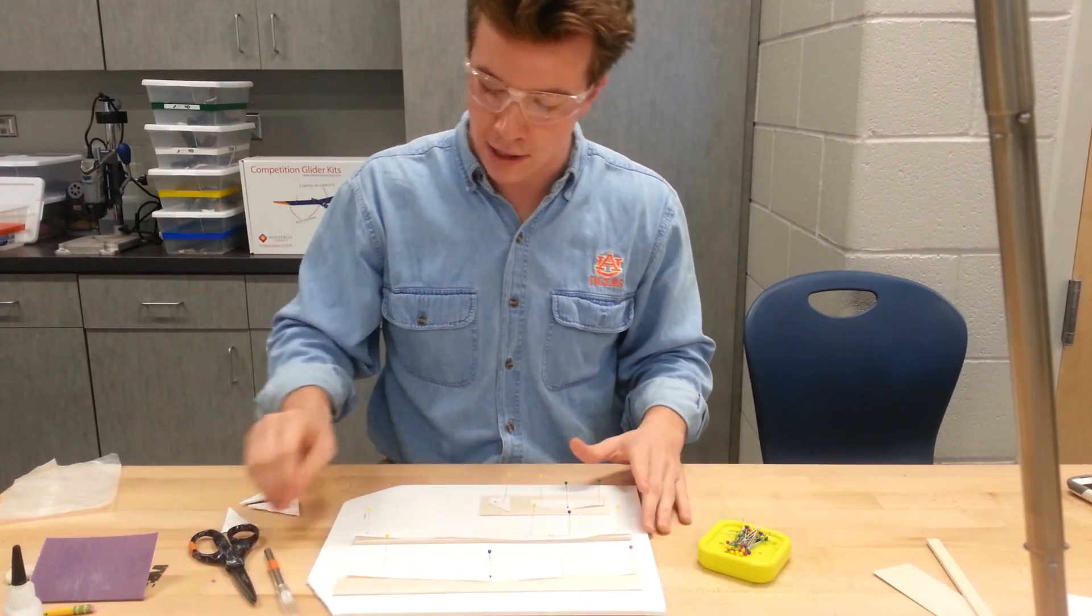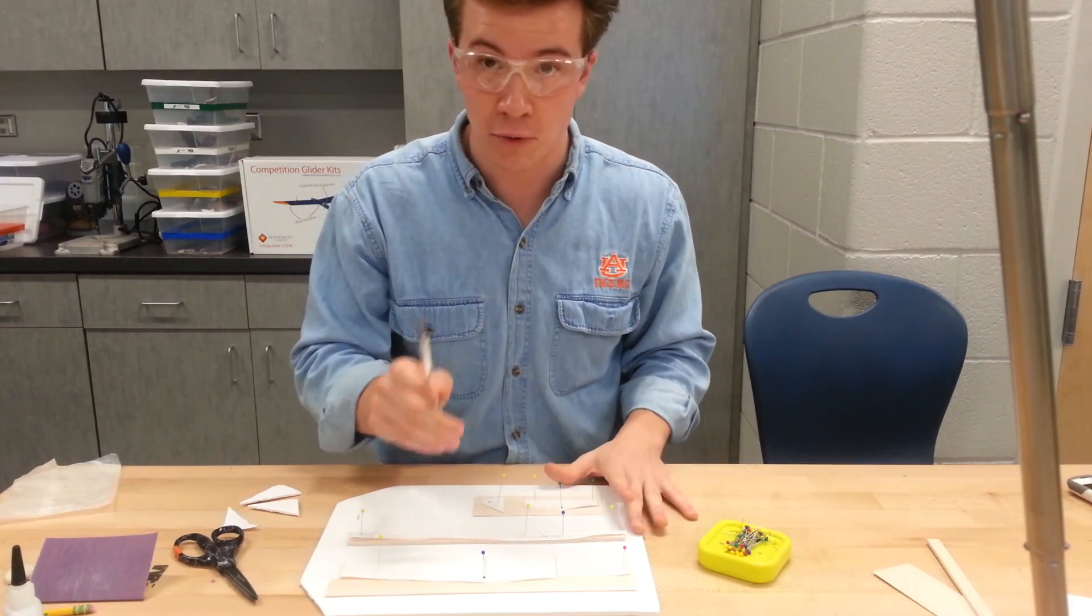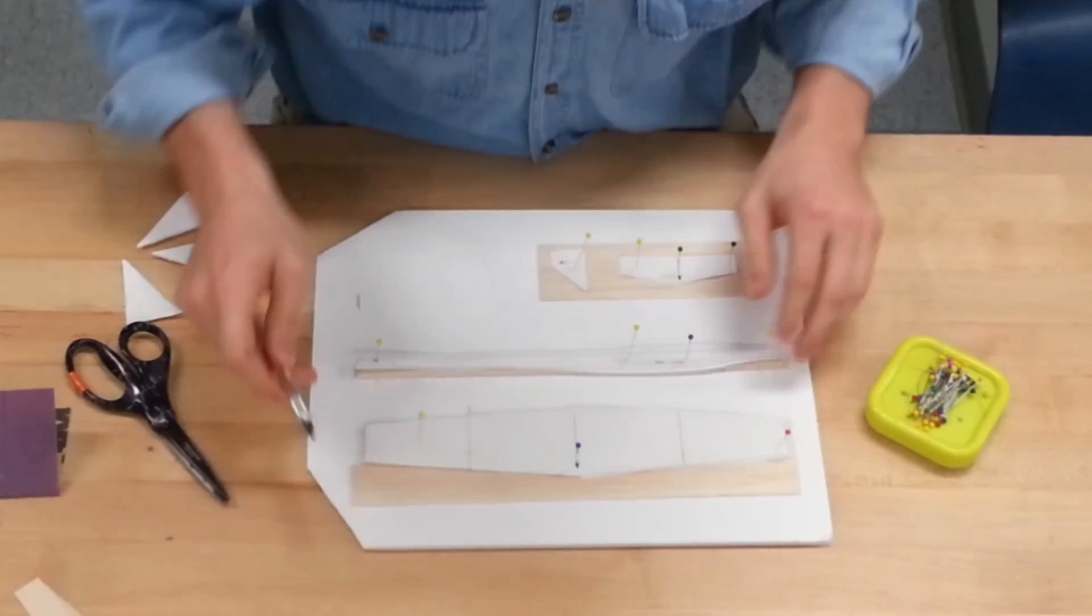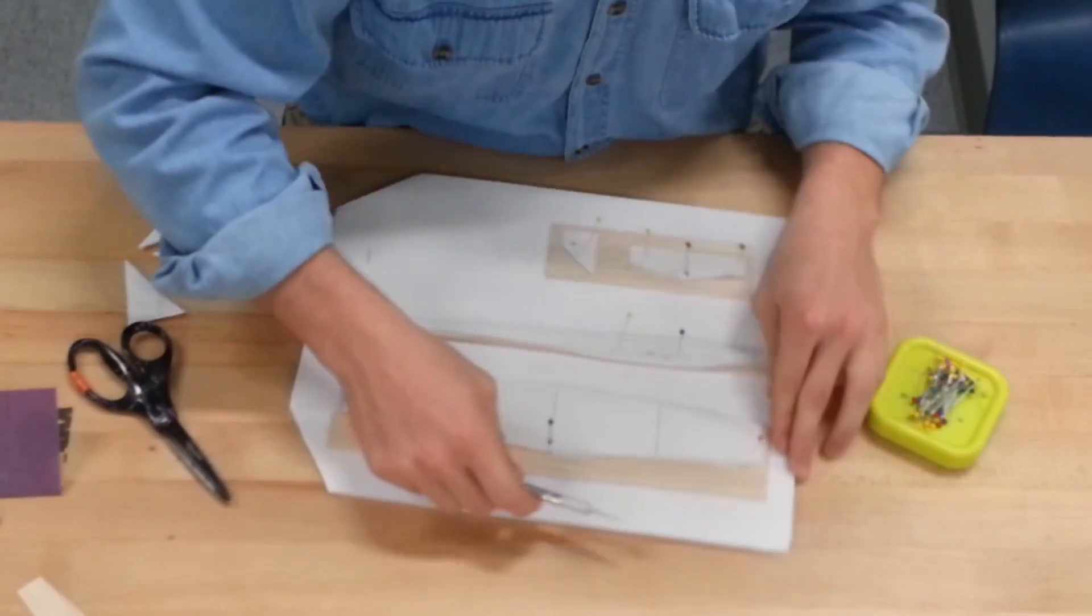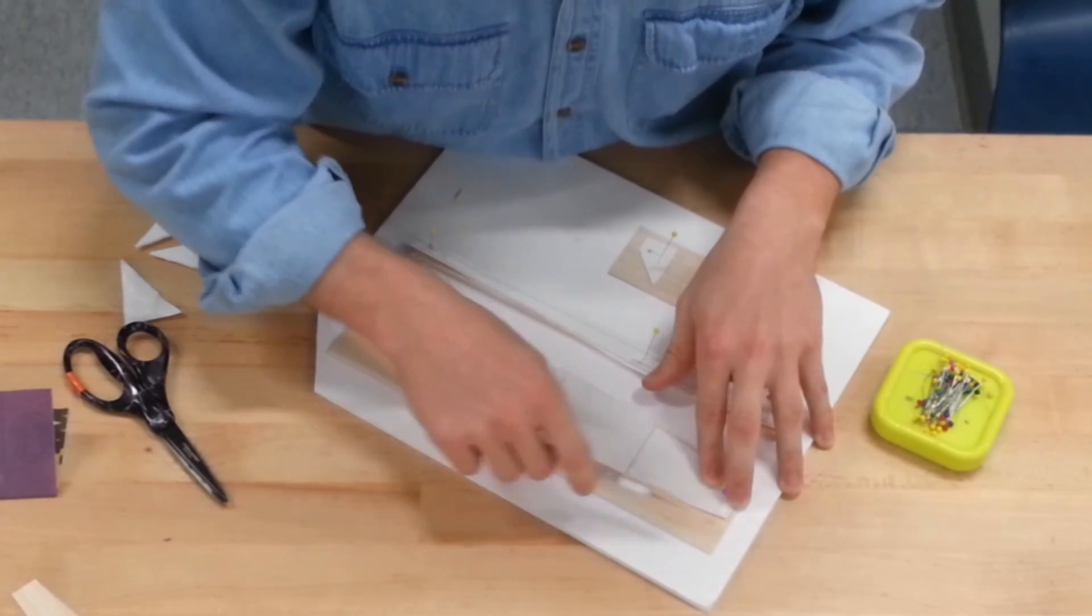Now that we're ready, we're going to take our exacto knife. Make sure you're wearing your goggles. I've got a little bit of my wing already cut out, but I want to make sure that I'm being very exact when I do this.